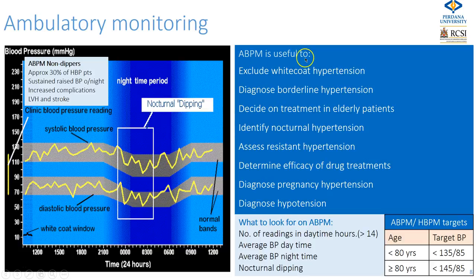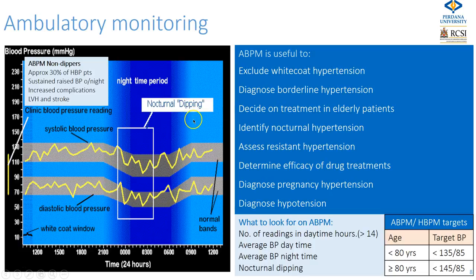Ambulatory monitoring is very useful in excluding the white coat effect, in diagnosing borderline hypertension, deciding if treatment is necessary in elderly patients, identifying nocturnal hypertension and non-dipping, assessing resistant hypertension, monitoring the efficacy of drug treatments, and can also be used in pregnancy hypertension and to diagnose patients who have hypotension.